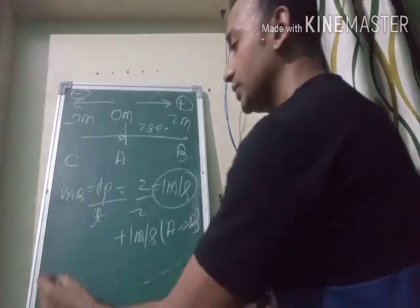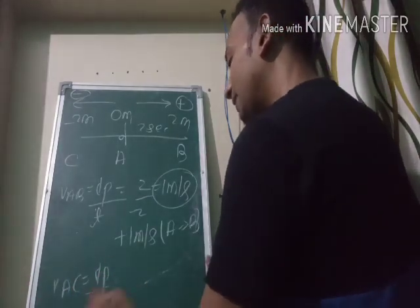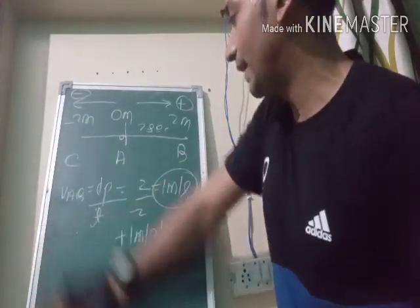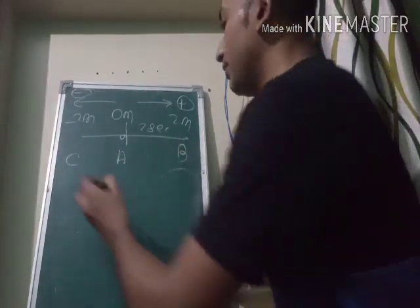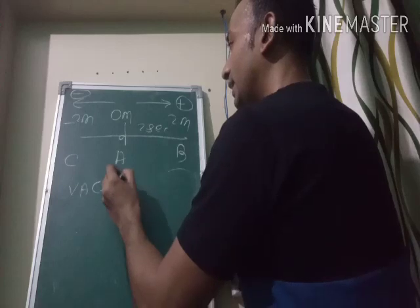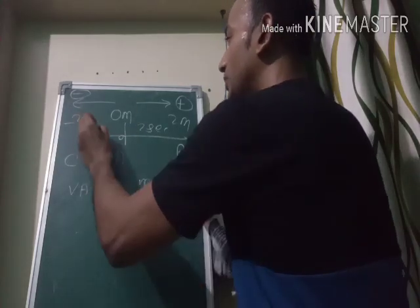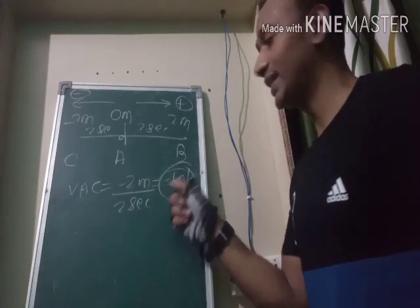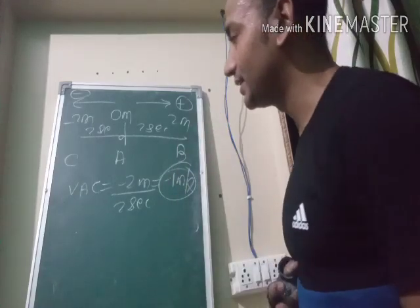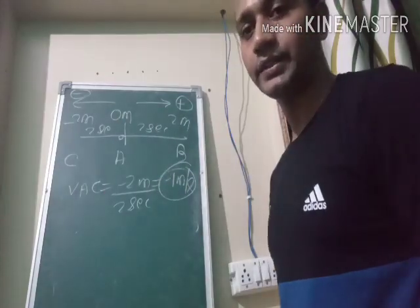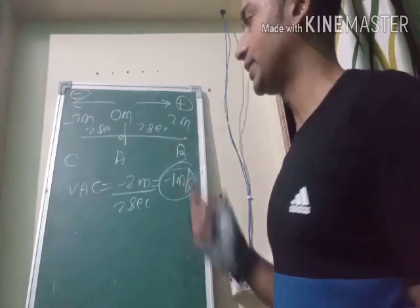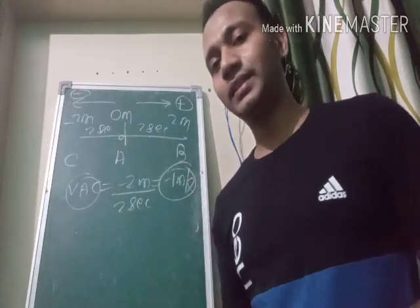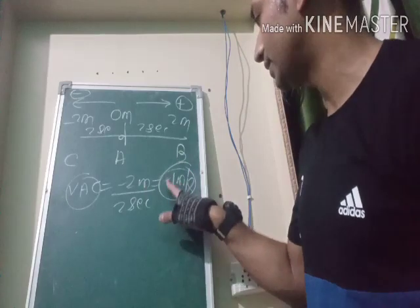Now if you move the same distance but in the opposite direction — from A to C — the displacement is minus two meters because displacement is a vector quantity and we must account for direction. With time again two seconds, the velocity is minus two divided by two, which equals minus one meter per second. The negative sign indicates you have moved in the opposite direction. So velocity depends on direction, confirming it is a vector quantity.